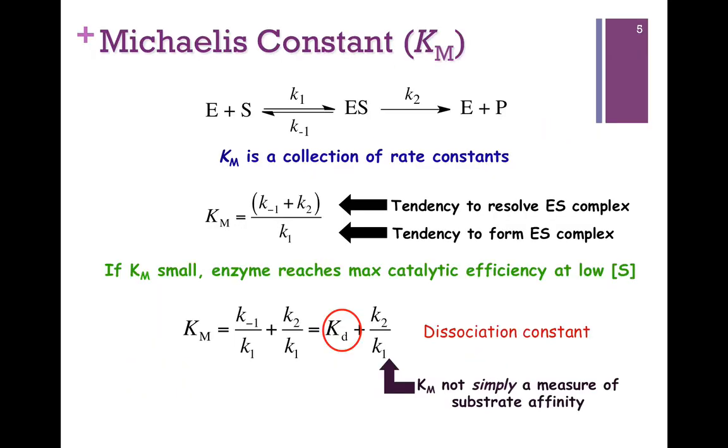We saw from our graph how we could estimate Vmax, but what about Km? Here's our simple reaction scheme. Km is the collection of rate constants - the ratio of the rate at which the enzyme-substrate complex resolves compared to the rate at which it forms. If K1 is large, it rapidly binds substrate, then Km gets small. The enzyme reaches maximum efficiency even at low substrate concentration.